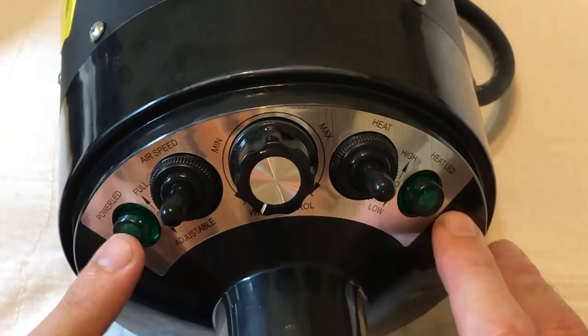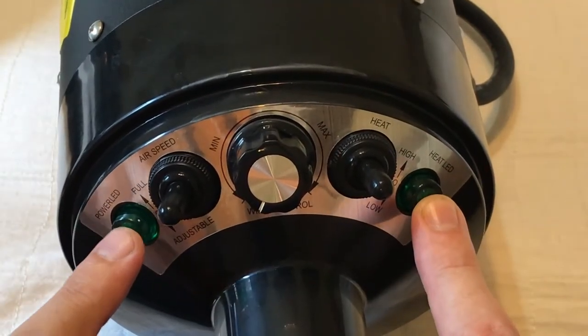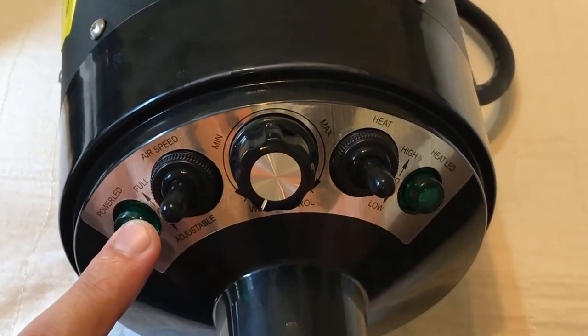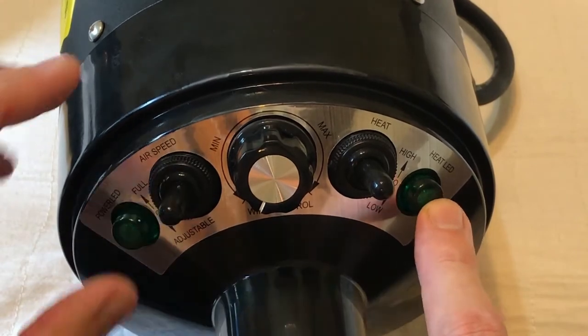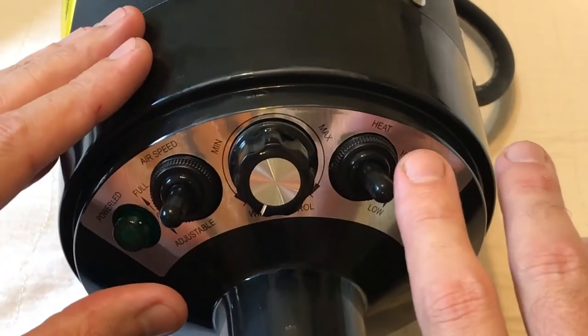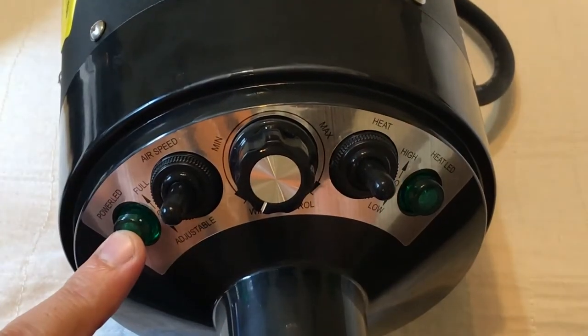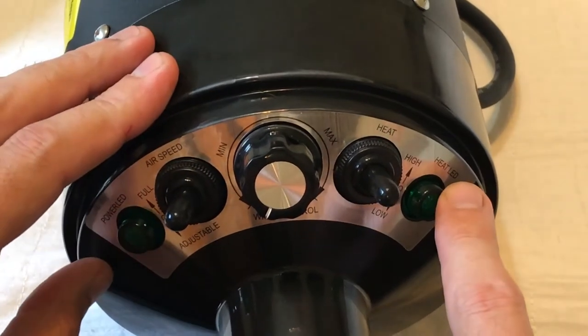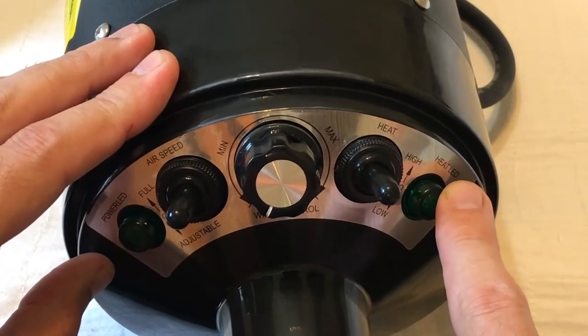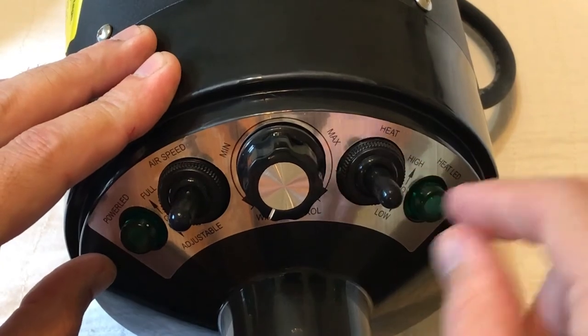The controls are pretty easy. First, I'll mention you've got two LED lights. You've got a power LED, and you've got a heat LED. When you turn the device on, no matter what setting you have it on, the power LED should light up for you. The heat LED will only light up whenever you're using heat, and that's going to be this switch over here.